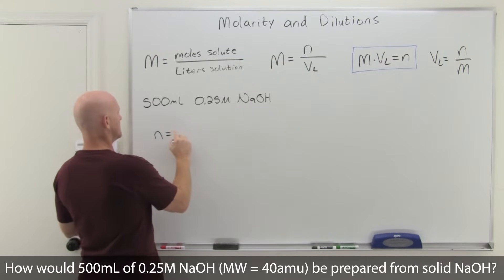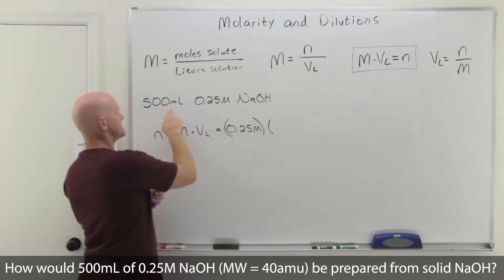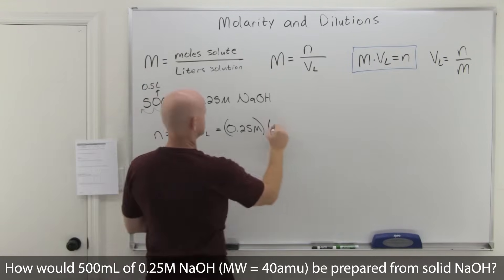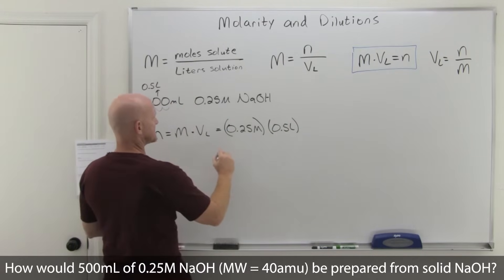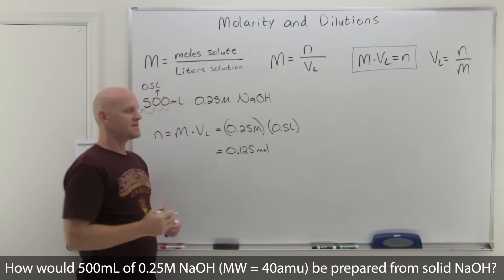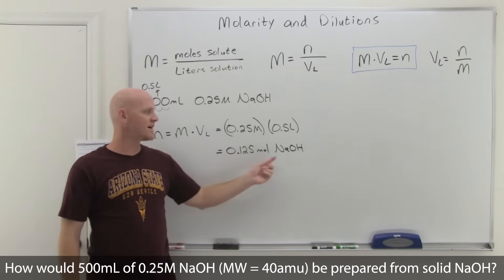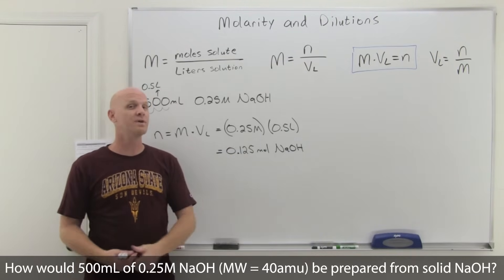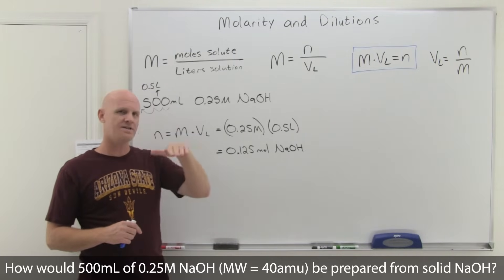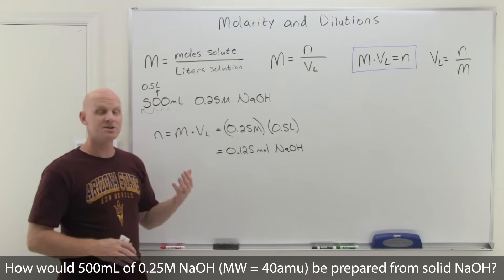Moles = molarity × volume in liters = 0.25 molar × 0.5 liters (converting 500 mL by dividing by 1000) = 0.125 moles of NaOH. To make this solution, we need to secure 0.125 moles of solid NaOH, put it in what's typically called a volumetric flask, and fill it up to a total volume of 500 milliliters. Volumetric flasks are calibrated to a specific volume at a thin line at the neck, so you get a pretty accurate measurement of that volume.